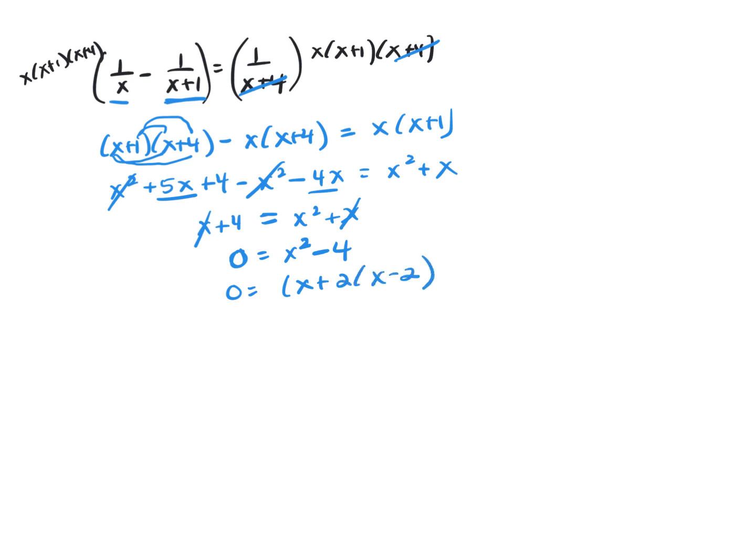That's how that factors. And then you set each factor equal to 0 because what's the only way you can multiply two things together and get 0? One of them has to be 0. That gives me x equal negative 2, x equal positive 2.